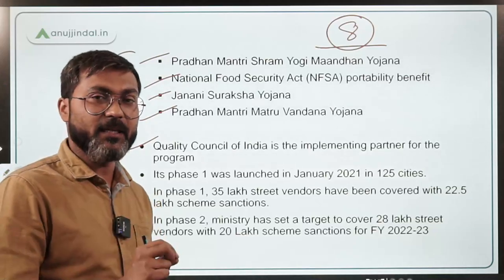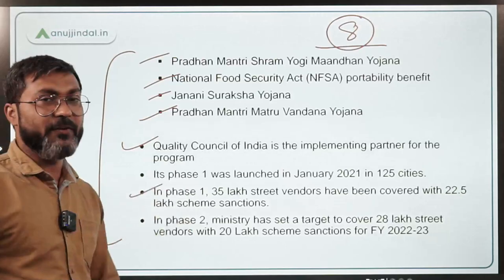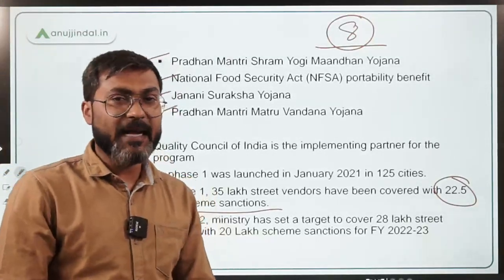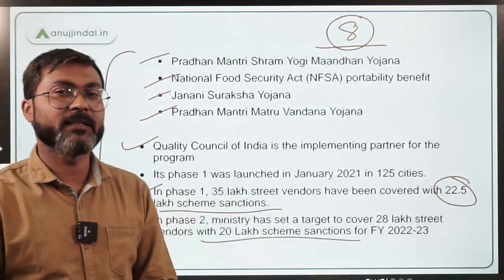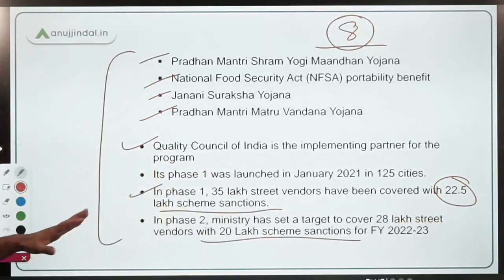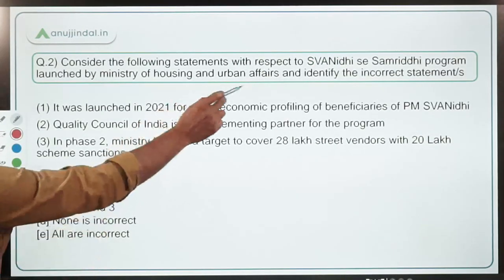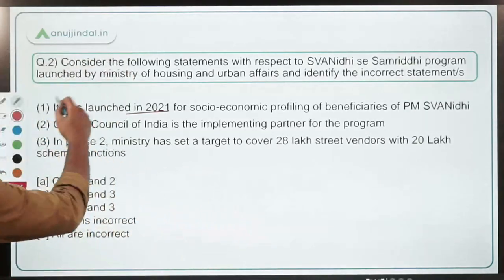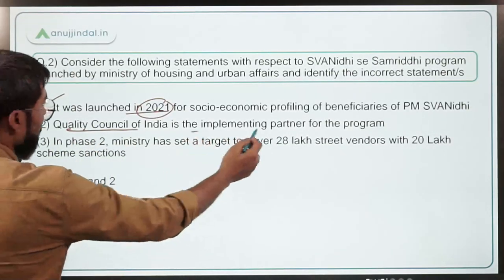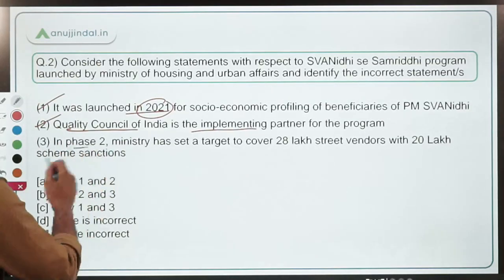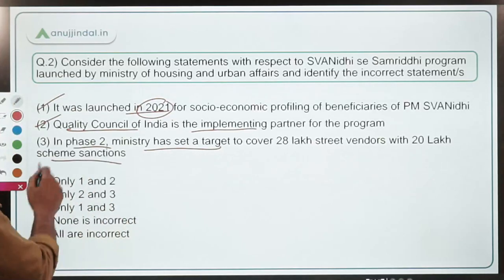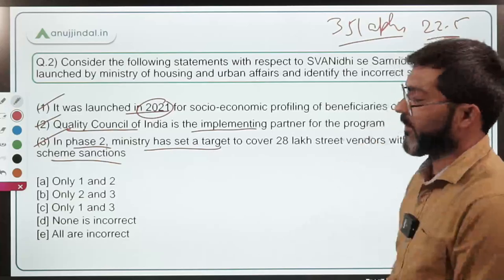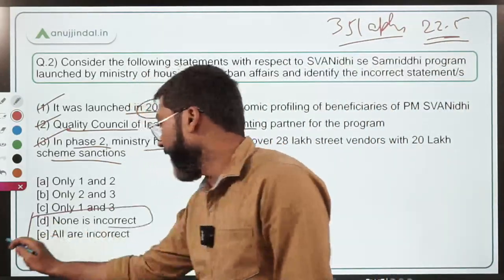The Quality Council of India is the implementing agency for this program. In phase one, 35 lakh street vendors were covered and provided with 22.5 lakh scheme sanctions. In phase two, the target is to cover 28 lakh street vendors with 20 lakh scheme sanctions in financial year 2023. Coming back to the question, all the given statements are correct, so the answer is option D — none is incorrect.